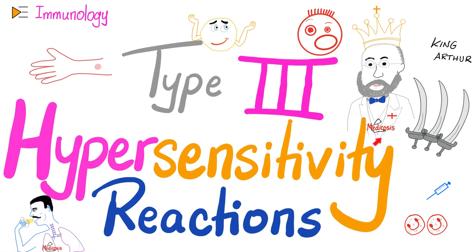What is going on everybody? It's Medicosis Perfectionitis, where medicine makes perfect sense. Let's continue our immunology playlist. In the last two videos we started talking about type 1 hypersensitivity reaction and type 2 hypersensitivity reaction. Today I will introduce you to King Arthur — the Arthus reaction — in type 3 hypersensitivity reaction.